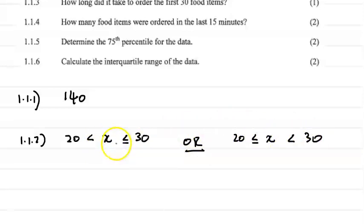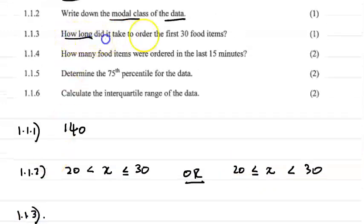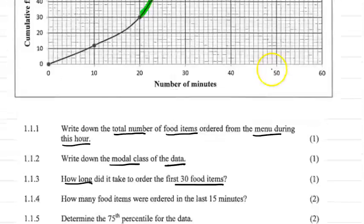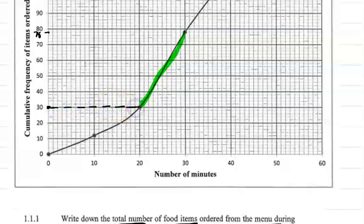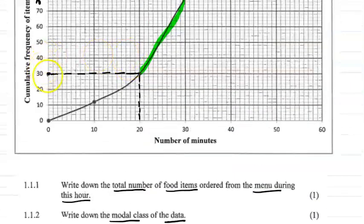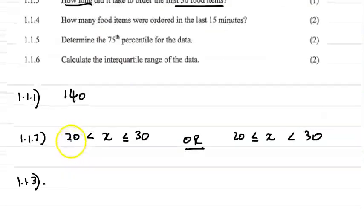Remember, one boundary must have a greater-than sign and one must have a greater-than-or-equal-to sign, so that we don't have repeating values in a particular interval. For 1.1.3 — how long did it take to order the first 30 food items — we go to our curve at 30 on the y-axis and read the time, which gives us 20 minutes. So the answer for 1.1.3 is 20 minutes.